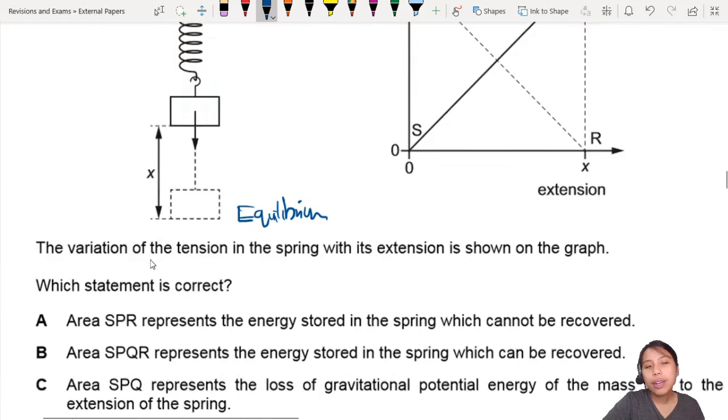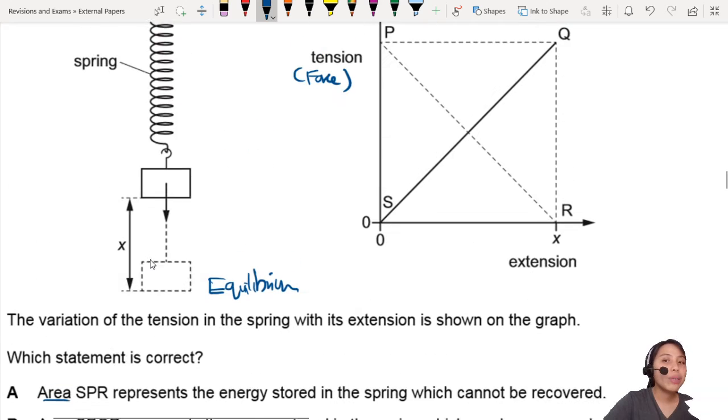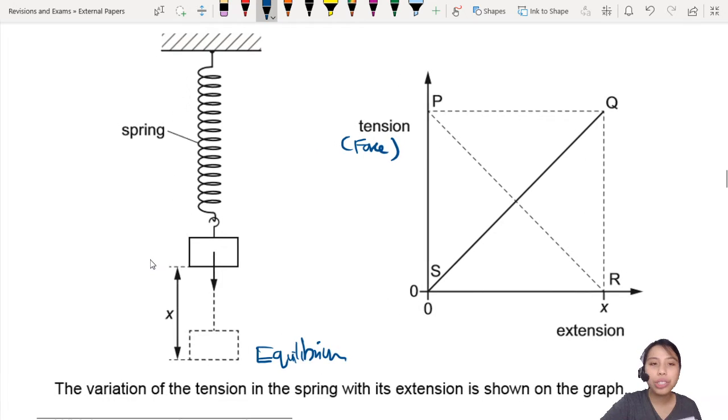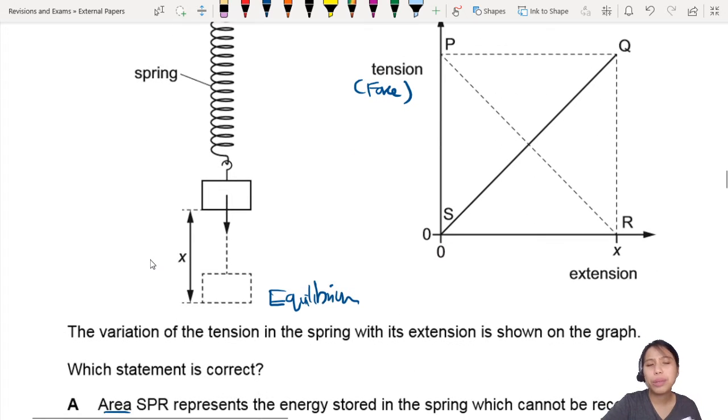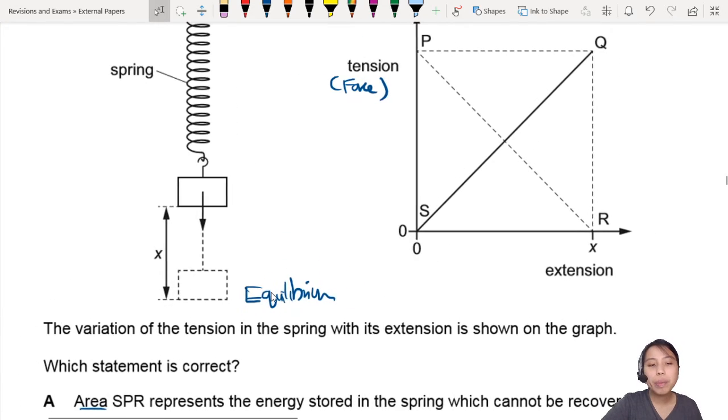And they're talking about areas everywhere. So when you see force-extension and you see area, they are probably talking about energy stored in the spring. Potential, and it's spring potential or elastic potential or strained energy. But let's go to each statement to see which is correct.